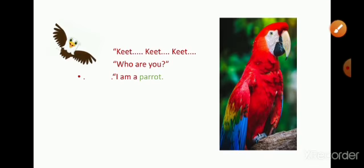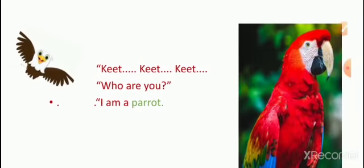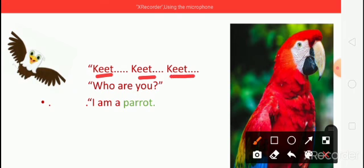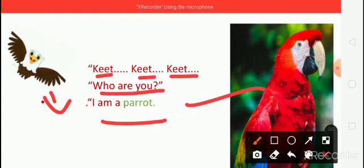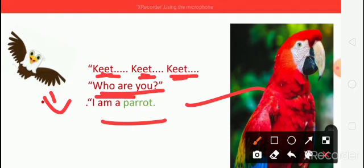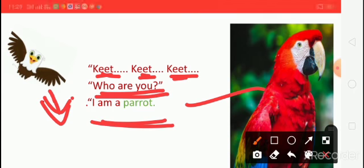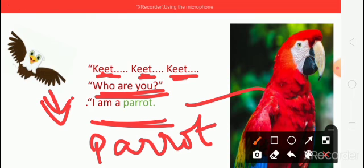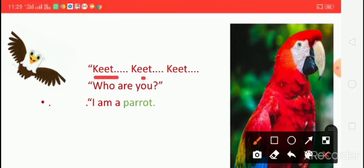And then another friend comes. Sound coming. Who are you? Ask the baby eagle. I am a parrot. I am a parrot. Who are you? Ask the baby eagle. I am a parrot. Parrot — say the spelling: P-A-R-R-O-T, Parrot. What is the sound of parrot? Keet, keet, keet.